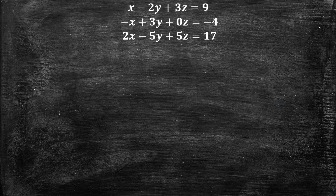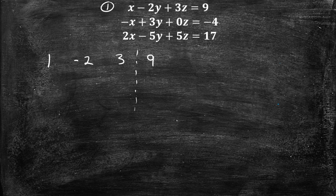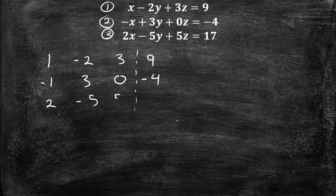We have these systems of equations and we want to solve them using matrices. The way we write this as a matrix is you take the coefficients of each row and put them under each other. Row one is 1, negative 2, 3 — the dashed line represents the equal sign — and 9. Row 2 becomes negative 1, 3, 0, negative 4. And row 3 becomes 2, negative 5, 5, and 17.